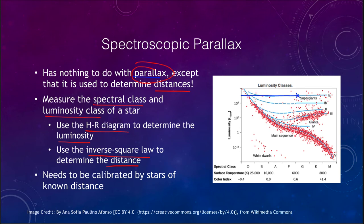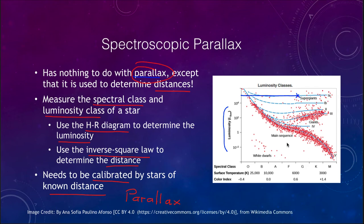As with other methods, this does need to be calibrated. We need stars of known distance — perhaps through regular parallax — that can be used to determine where the luminosity scales fit on the HR diagram, allowing us to calibrate the scale and tell us where these stars fit in. Once we establish this for several stars, we can then use it to determine distances to other stars of unknown distance, just by determining their spectral classification.